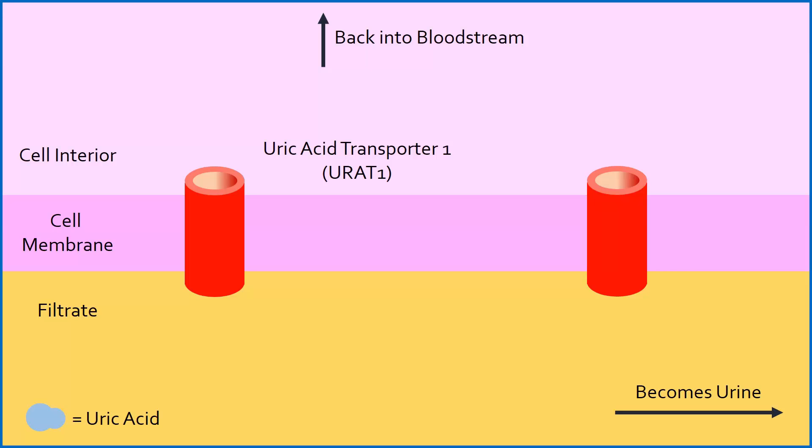URAT1, which is found on the membrane of cells that line the tubes which drain urine, can reabsorb uric acid from the filtrate into the cell, which then sends uric acid back into the blood.